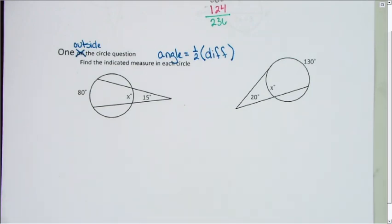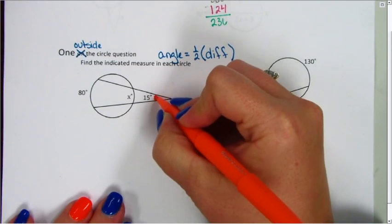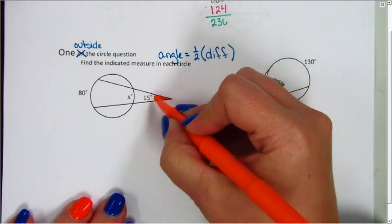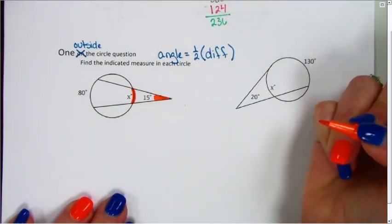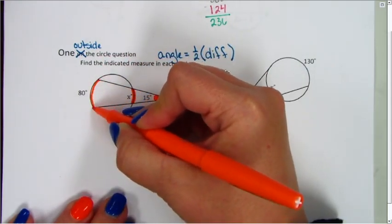When I look at my first example, I can see this angle that is outside the circle is 15 degrees. As I come out of that angle, the first arc I'm going to hit is x degrees, and the next arc I'm going to hit is 80 degrees.